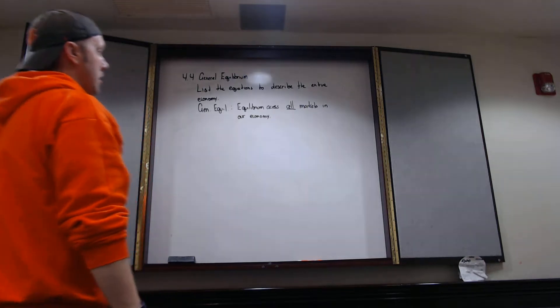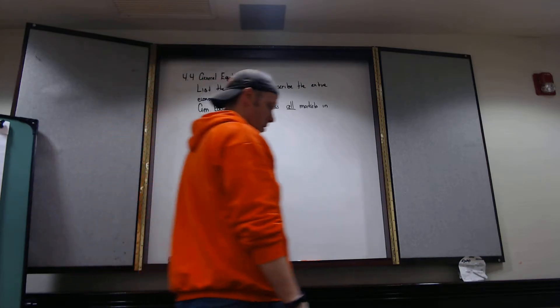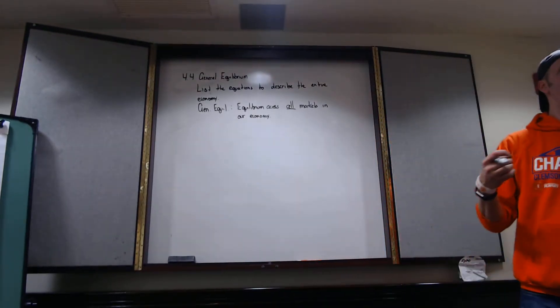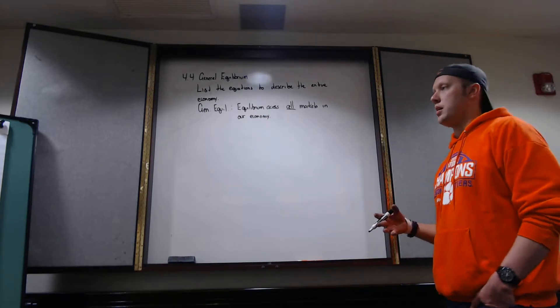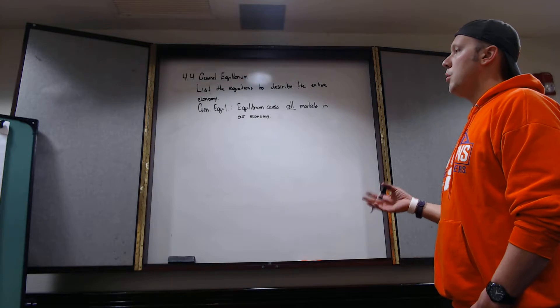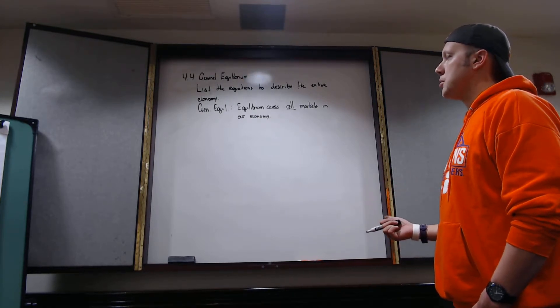We've got consumption markets. We've got capital markets. We want those guys to clear. We need an equation to make sure that the demand for consumption and capital markets won't be exceeding the resource constraint.